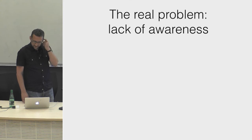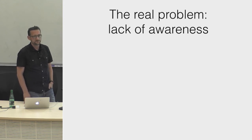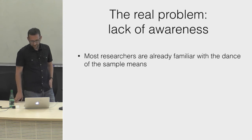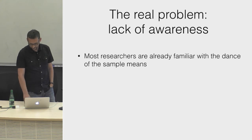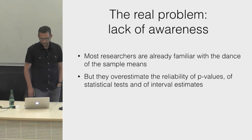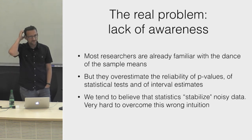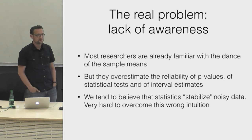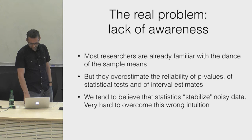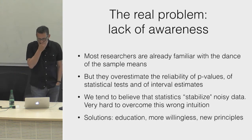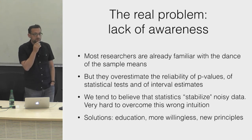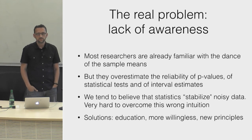I think the real problem we need to address is a lack of appreciation by researchers of the uncertainty in their statistical analysis. We are all familiar with the dance of the sample means — it's in the textbooks. But somehow we overestimate the reliability of p-values; this is called 'test overestimation.' There is a sort of magical thinking: we think statistics are magic because they will stabilize and turn uncertainty into certainty. Statistics cannot really do that, and it's hard to overcome this wrong intuition — that's exactly why simulations of hypothetical replications are very useful.